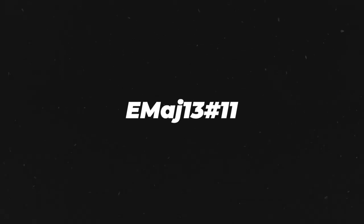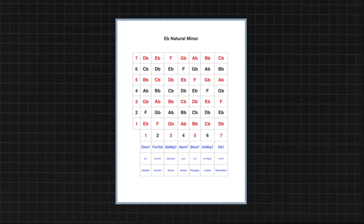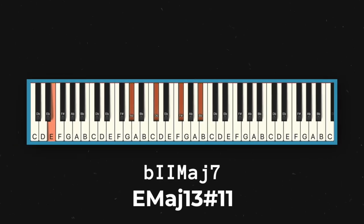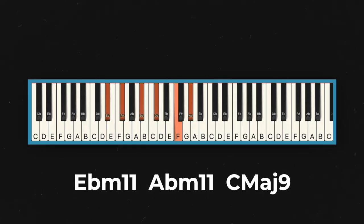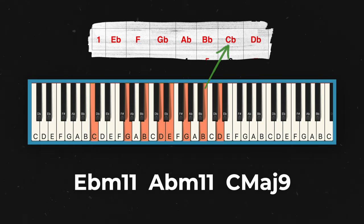So how do we analyze E major 13 sharp 11? It's the flat-2 chord, which is non-diatonic — in other words, it's not part of the Eb minor family the way Ab minor is. The root of the chord is E, and there's no E in Eb minor. That said, all the other notes in the voicing I'm playing do exist within Eb minor. So even though the flat-2 chord may be non-diatonic, it's not that unexpected sounding. Now if I went to something like C major 9, that comes out of nowhere because there's only one note that's in the Eb minor scale.